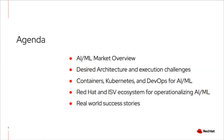As mentioned, these are the key topics I'll be spending the next few minutes on. We'll start with an overview of the market and talk about design, architecture, and execution challenges. Then we'll briefly talk about how containers, Kubernetes, and DevOps can actually help speed up AI/ML. And finally, we'll talk about the Red Hat and ISP ecosystem and how OpenShift as well as the ecosystem can help you operationalize AI/ML. At the end, we'll talk about real-world success stories.